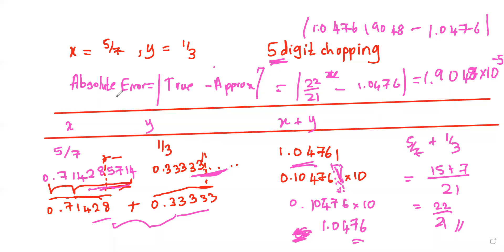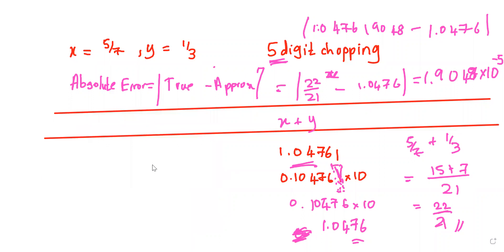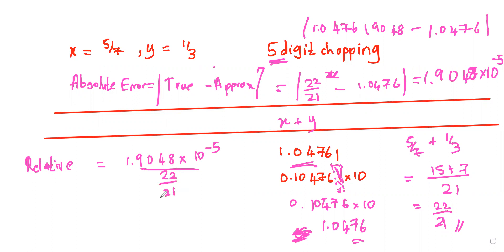Now we are going to find the relative error. The equation is: relative error = (true − approximate) / true. Here the difference is 1.90448 × 10⁻⁵ divided by the true value 22/21. Using the calculator: 21/22 ≈ 1.8181... × 10⁻⁵. You can see that it's also a very small amount — ten to the power of minus five — so it's fine to use this calculator for x plus y.